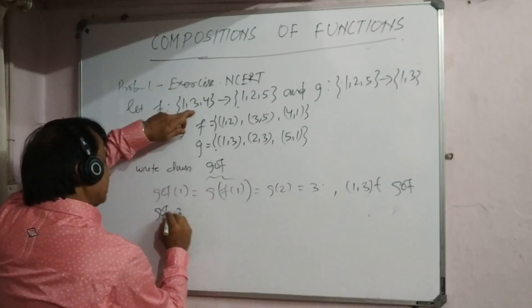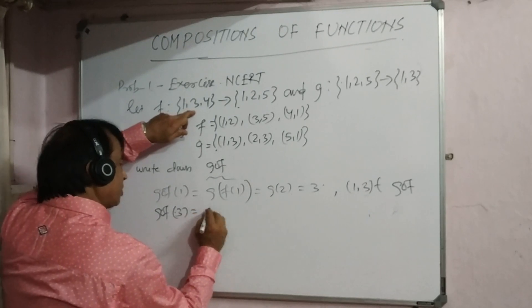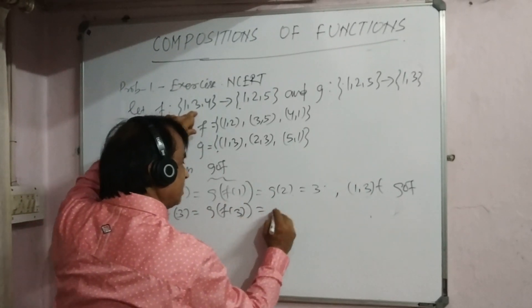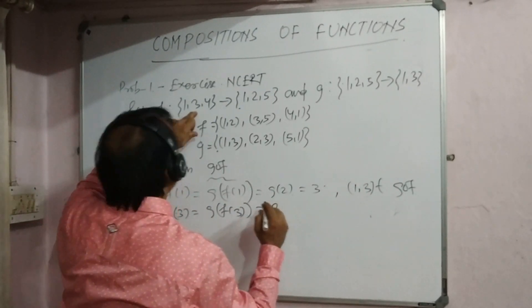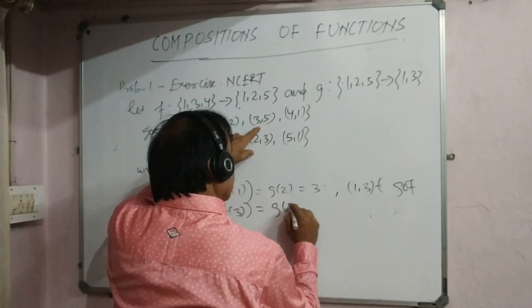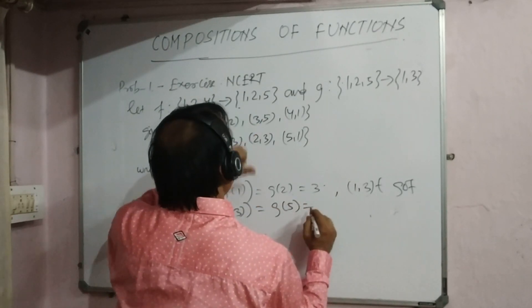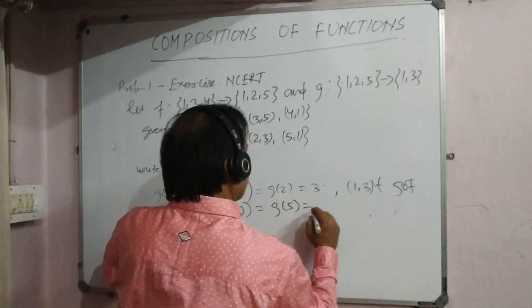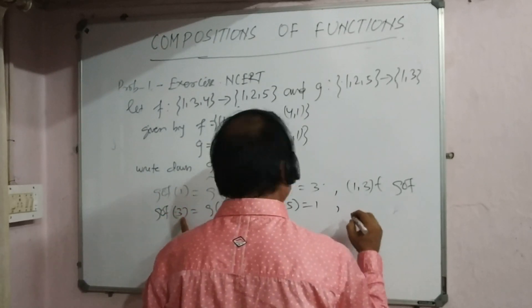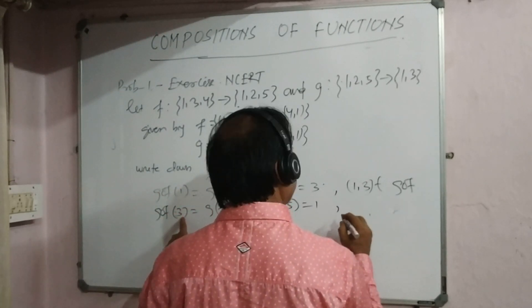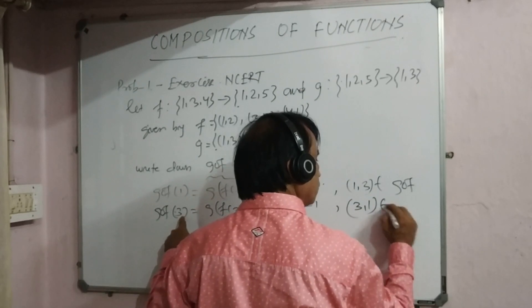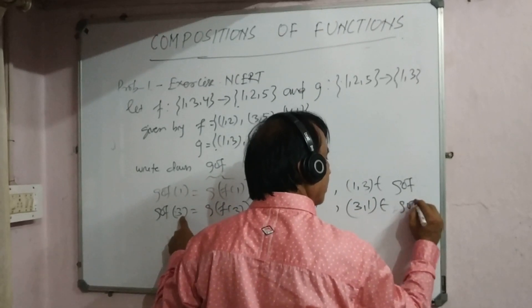The next element of the domain of f is 3. So gof(3) = g(f(3)) = g(5) = 1. We get (3, 1) belongs to gof.